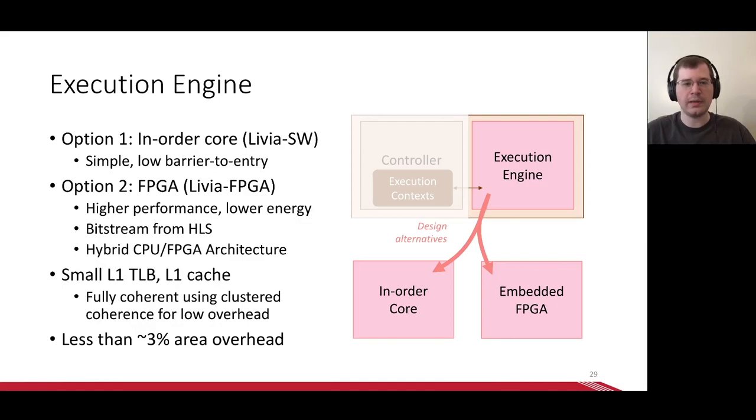Switching gears to the execution engine, we explored two options, a small in-order core and an embedded FPGA. The core is simpler and has a lower barrier to entry, while the FPGA is higher performance and takes less energy. To ease programming, we generated the bitstreams for the FPGA with high-level synthesis. Choosing the FPGA creates a unique hybrid CPU FPGA architecture, in which tightly integrated FPGAs are distributed in a sea of memory. With either option, the engine has a small L1 TLB and a coherent L1 cache. Altogether, we estimate that Livia adds less than 3% area overhead on top of the baseline CMP.